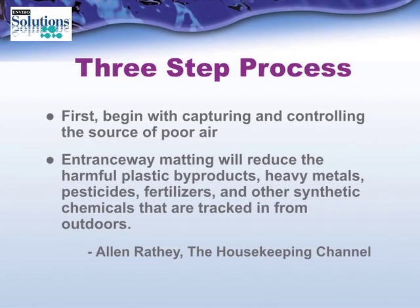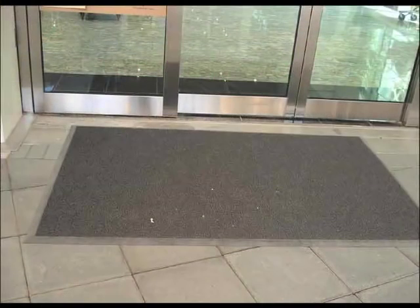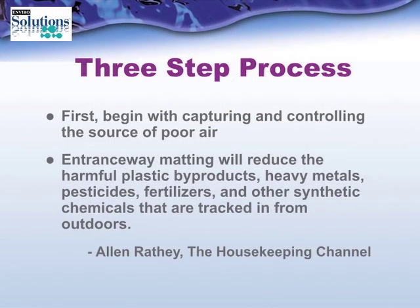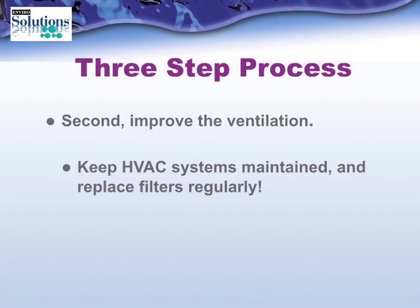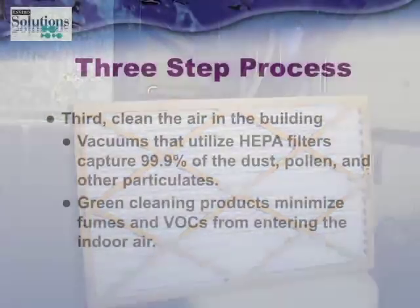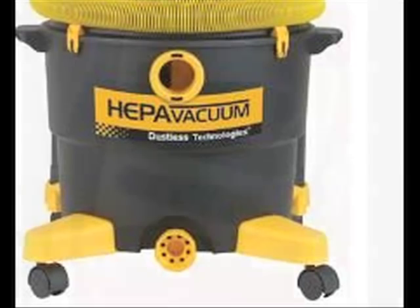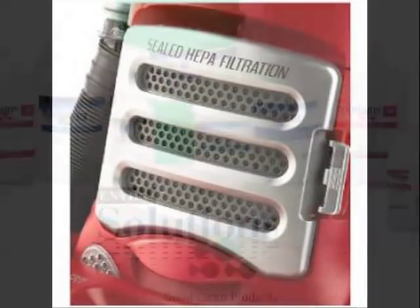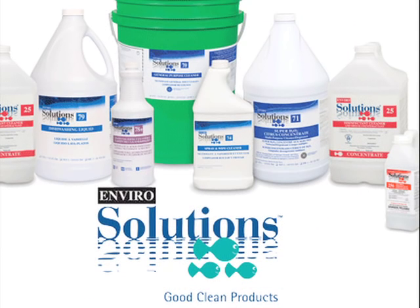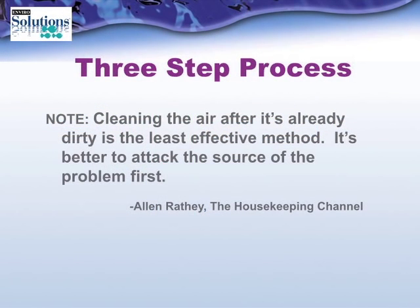We look at indoor air quality as a three-step process. First, begin with capturing and controlling the source of poor air — entry matting will reduce harmful plastic byproducts, heavy metals, pesticides, fertilizers, and other synthetic chemicals tracked in from outdoors. Second, improve the ventilation: keep HVAC systems maintained and replace filters regularly. Third, clean the air in the building — vacuums with HEPA filters capture 99.9% of dust, pollen, and other particulates, and green cleaning products minimize fumes or VOCs from entering the indoor air. Cleaning the air after it's already dirty is the least effective method; it's better to attack the source of the problem first.